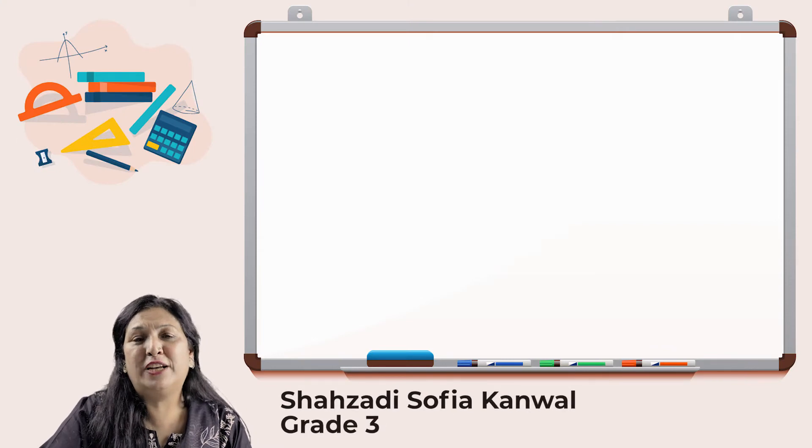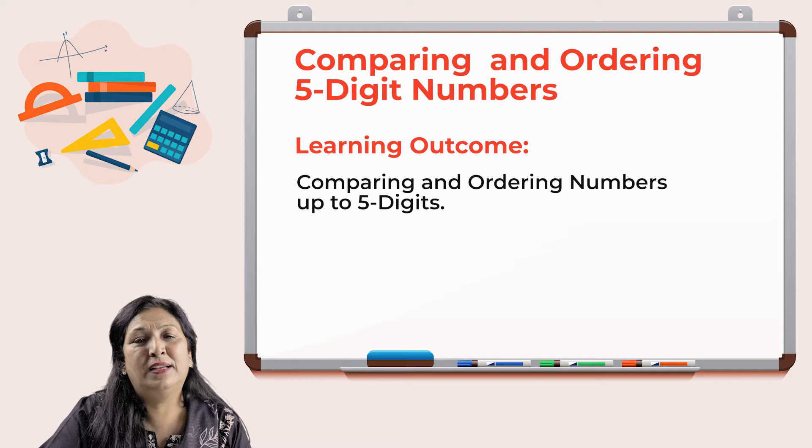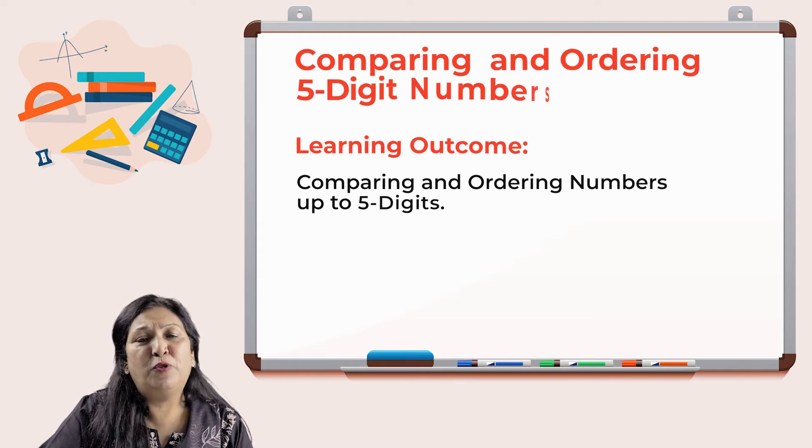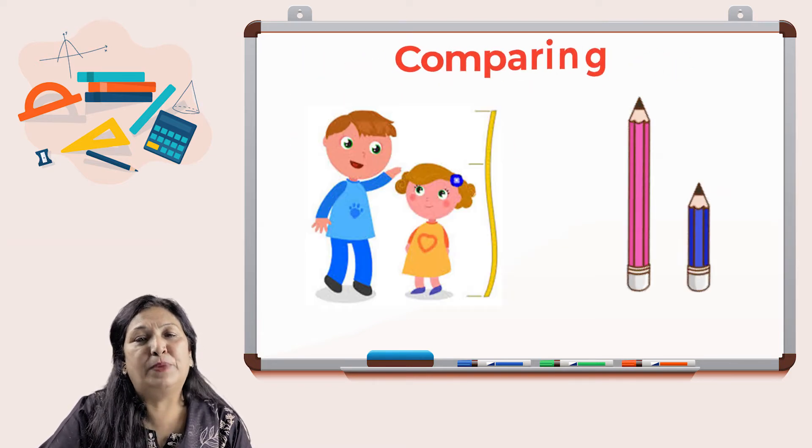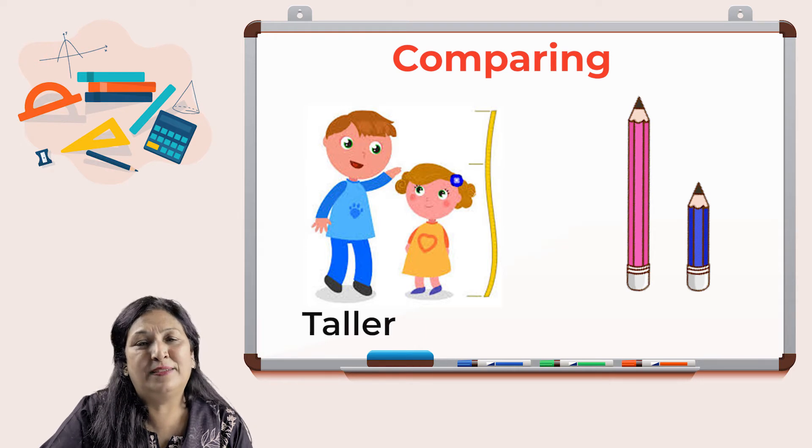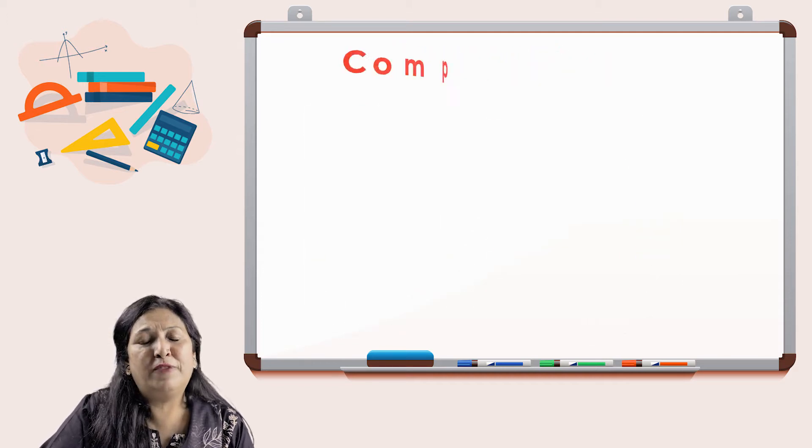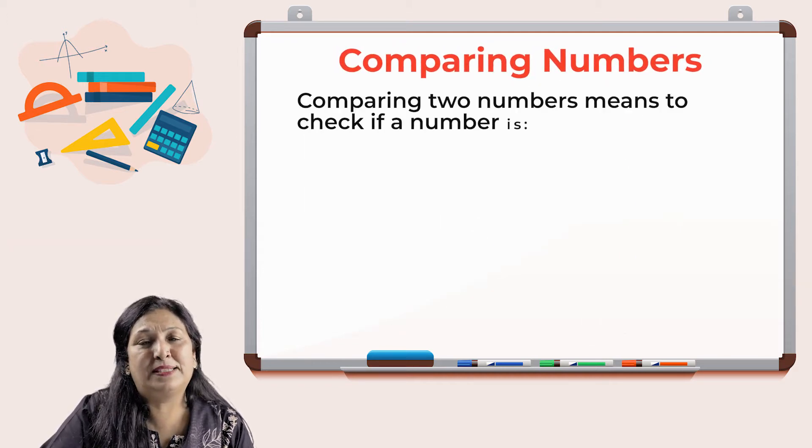Hello students, today we are going to compare and order five digit numbers. But before we begin, look at these pictures carefully and compare them. Absolutely correct, the boy is taller than the girl and the pink pencil is longer than the blue pencil. Today we are going to compare numbers.